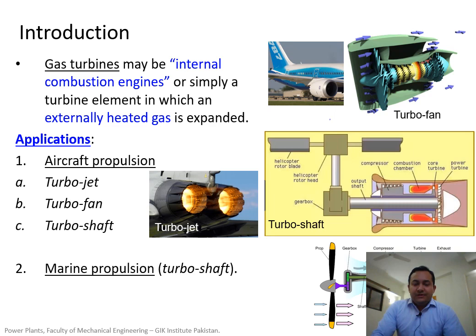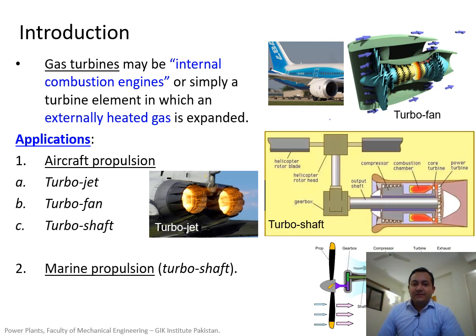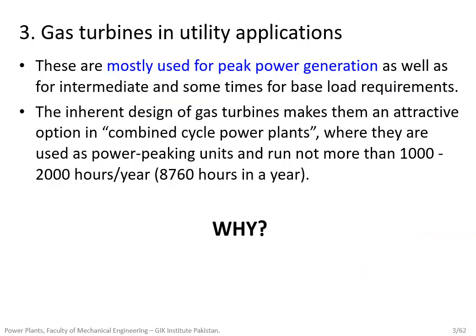Gas turbines can be classified as an internal combustion engine. We started with different applications: they can be used in aircraft propulsion, including turbojet, turboshaft, turboprop, and turbofan engines. They are also used in marine propulsion and in utility applications — primarily for peak power generation, as well as for intermediate and sometimes baseload applications.